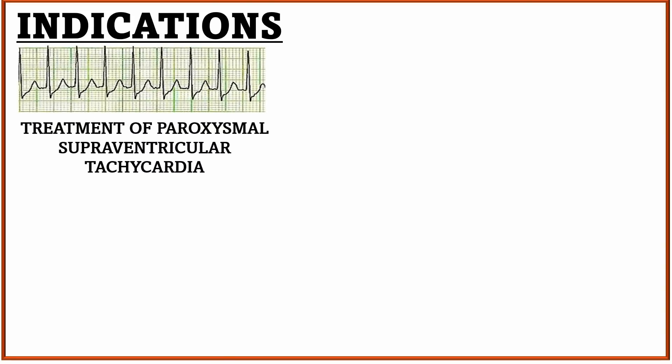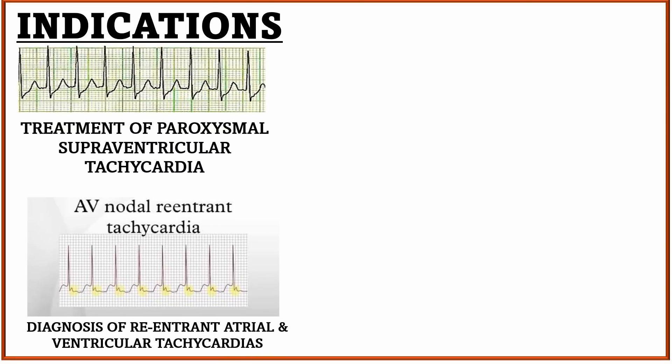Now let us see the indications of administering Injection Adenosine. Firstly, it is used in the treatment of paroxysmal supraventricular tachycardia. Second, it is used to differentiate and diagnose re-entrant atrial tachycardia and ventricular tachycardia.